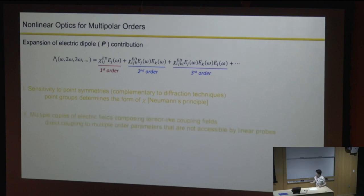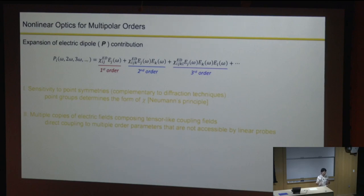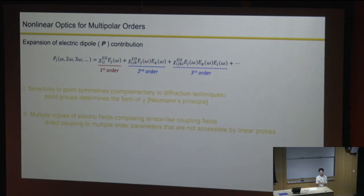Another benefit: in the second-order process, we have two copies of the incoming field and one copy of the outgoing field—three vectors total. In the real experiment, these three vectors couple together to form a tensor, and it's this tensor that has the right symmetry to your multipolar order parameter, making the multipolar order visible through this process. A third benefit is that since we use pulsed lasers, we can also do dynamics with time resolution.